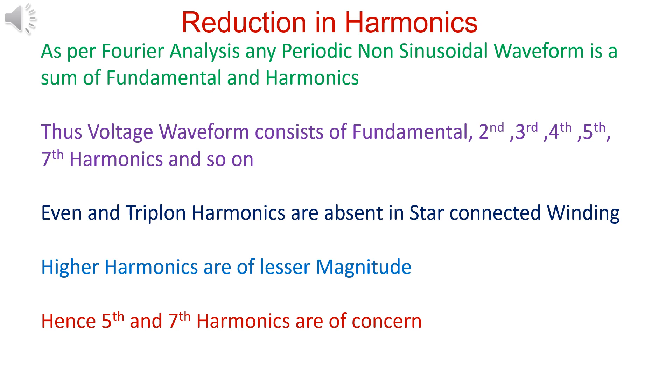As per Fourier analysis, any distorted periodic waveform consists of fundamental and harmonics. In star connected stator winding, even and triplen harmonics are absent. Higher harmonics are of lesser magnitude. Hence, fifth and seventh harmonics are of concern.